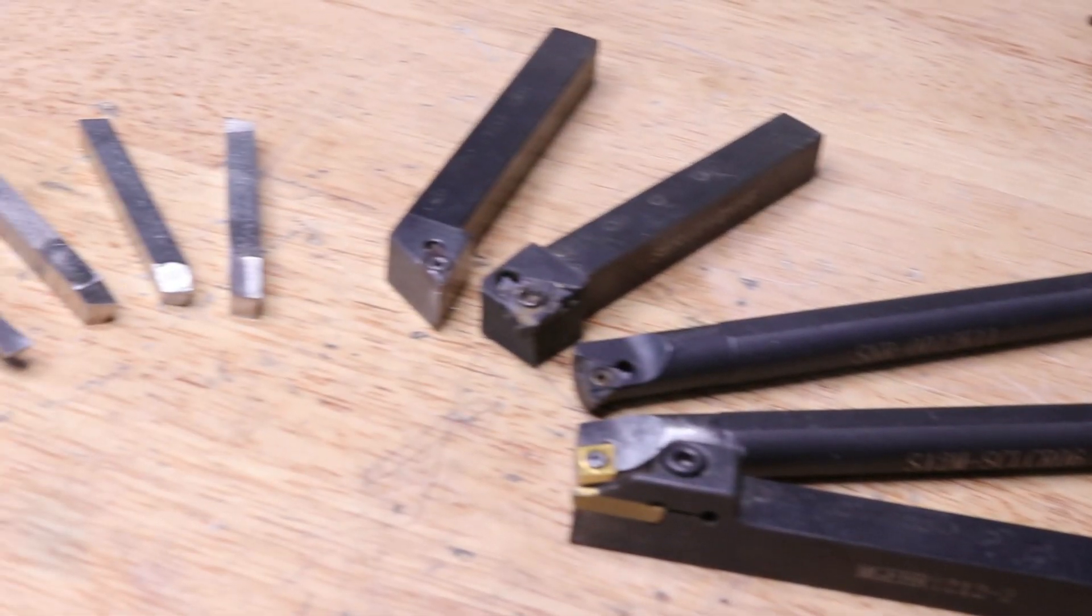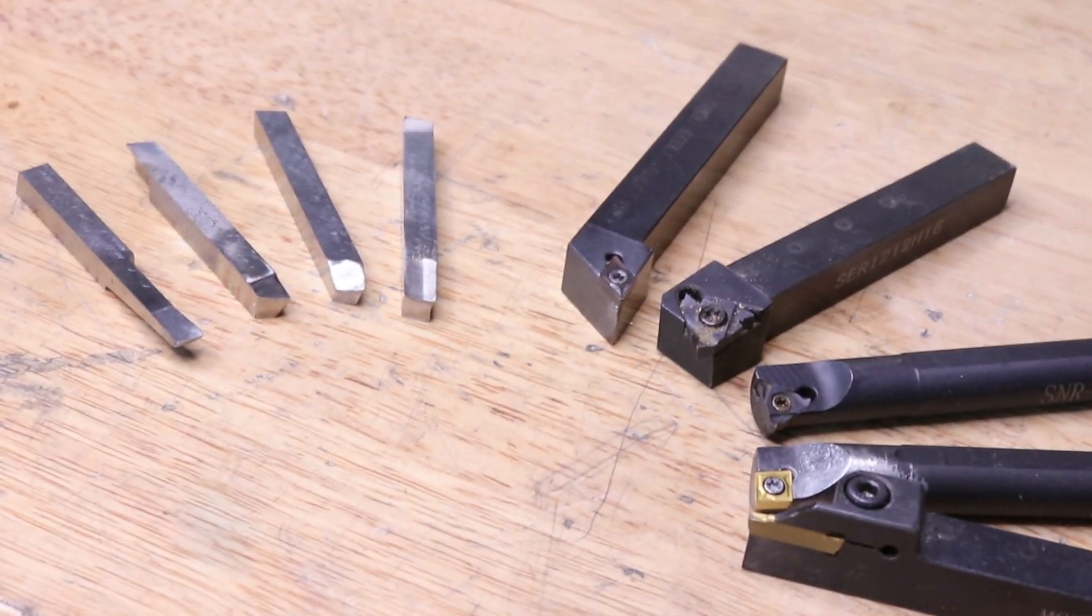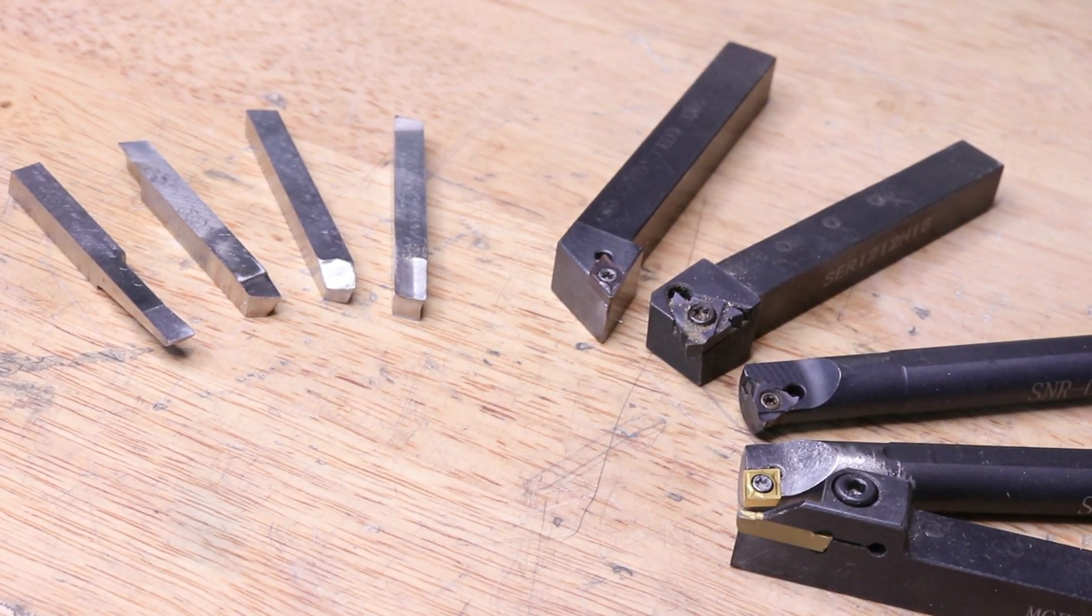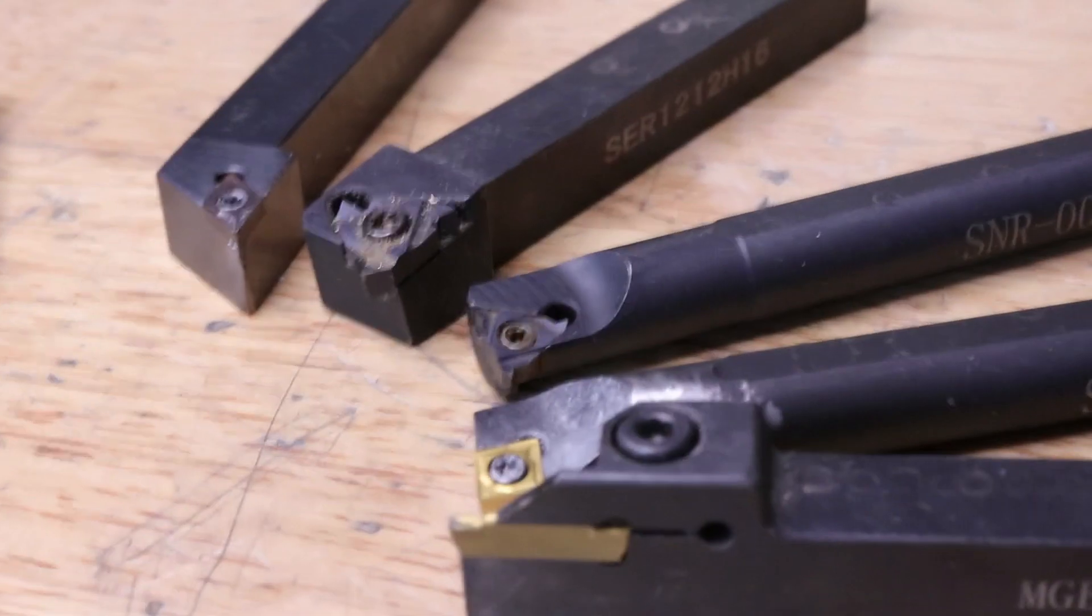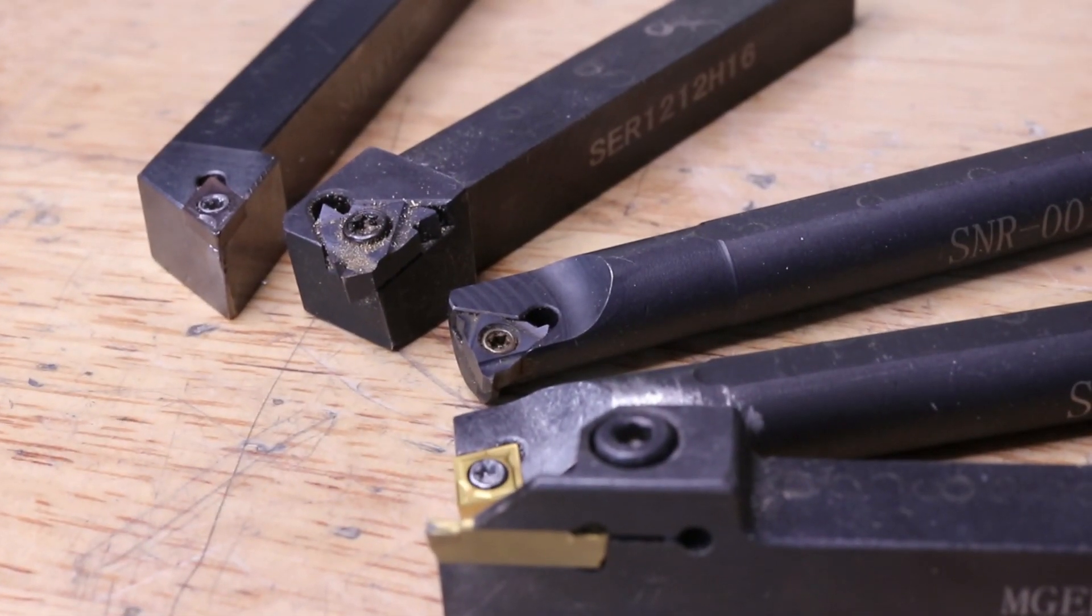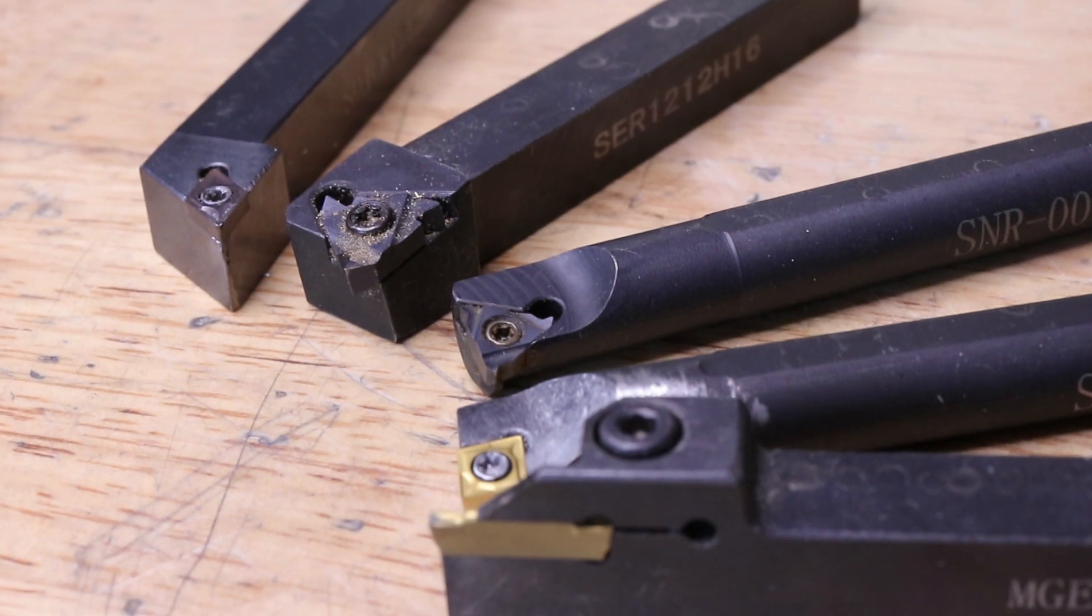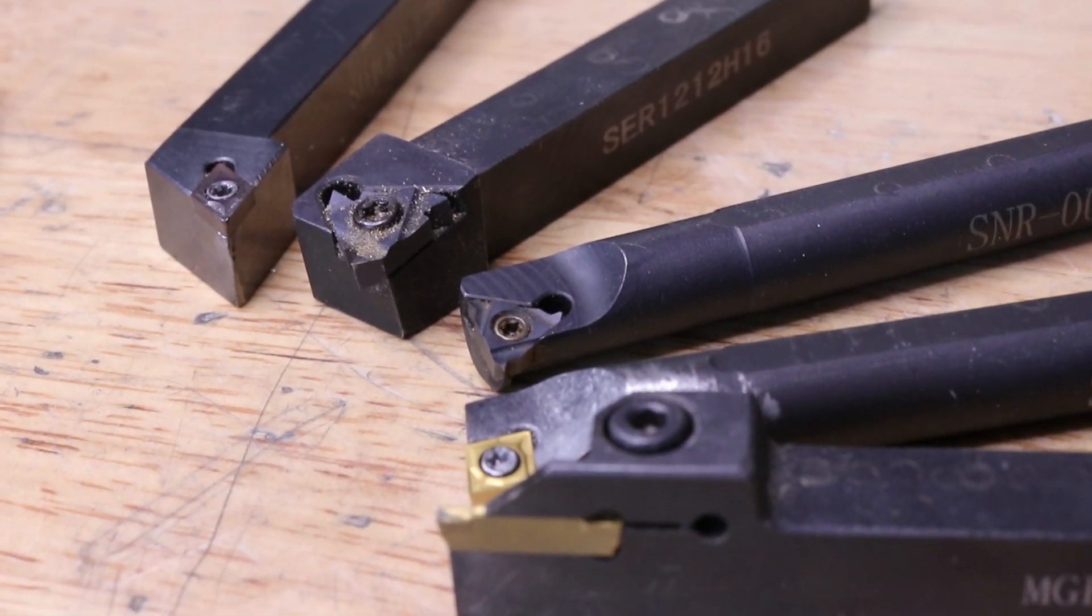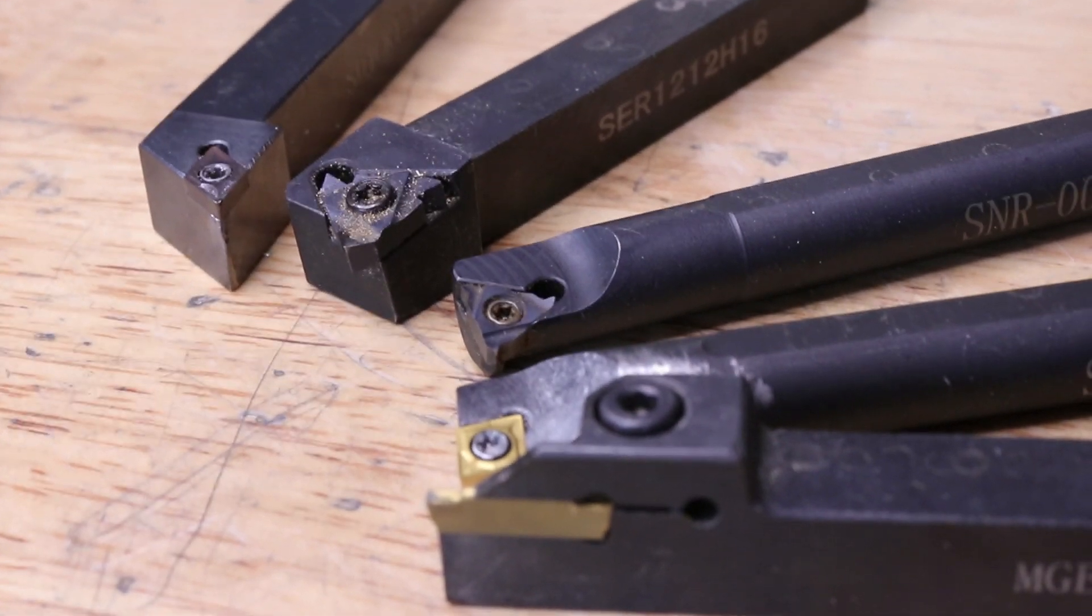For modern tools, machinists turn to three different types of tools: high-speed steel, carbide insert tools, and brazed carbide. Brazed carbide is probably the least used tooling nowadays and it probably deserves its own video. Today, I'm going to stick to talking about carbide inserts and high-speed steel.